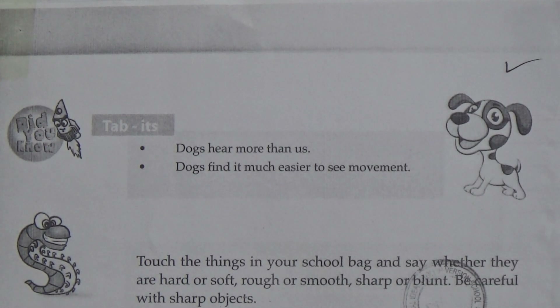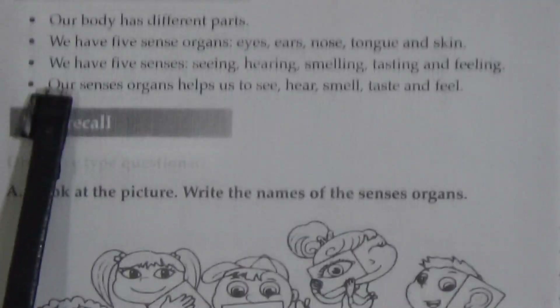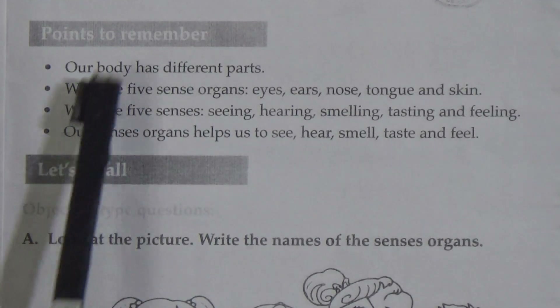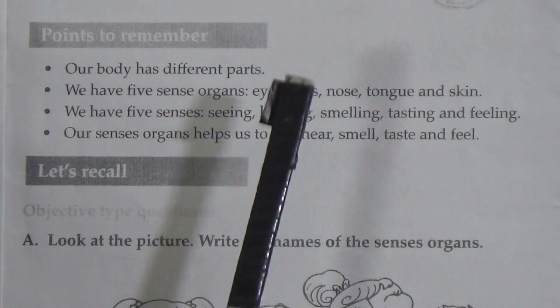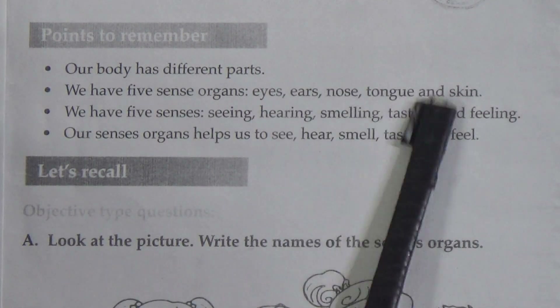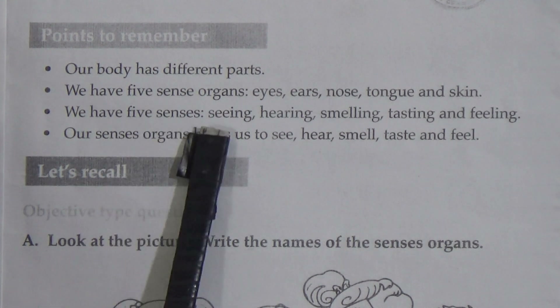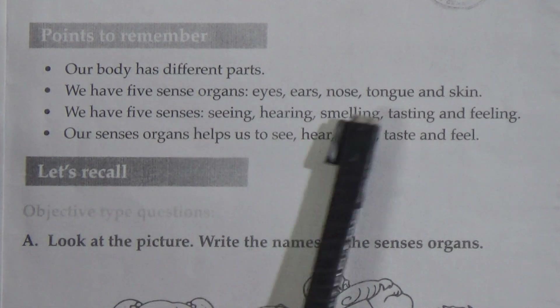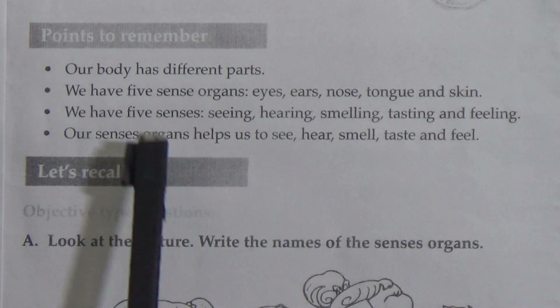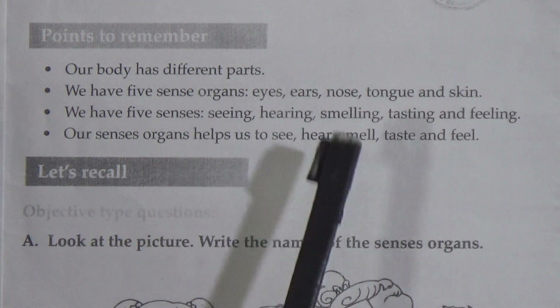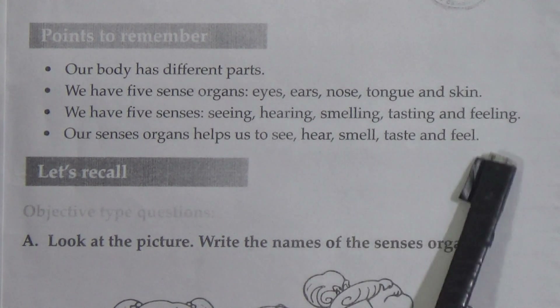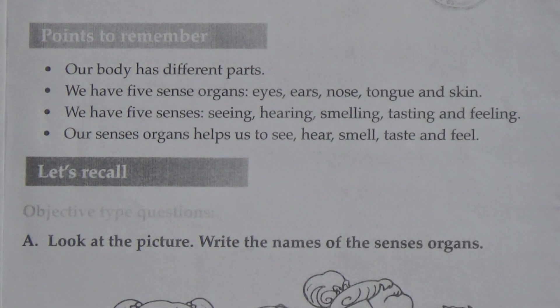Now go to the next page — 'Points to Remember.' My dear students, these are the important lines for this chapter that you must memorize: Our body has different parts. We have five sense organs — eyes, ears, nose, tongue, and skin. We have five senses — seeing, hearing, smelling, tasting, and feeling. Our sense organs help us to see, hear, smell, taste, and feel.